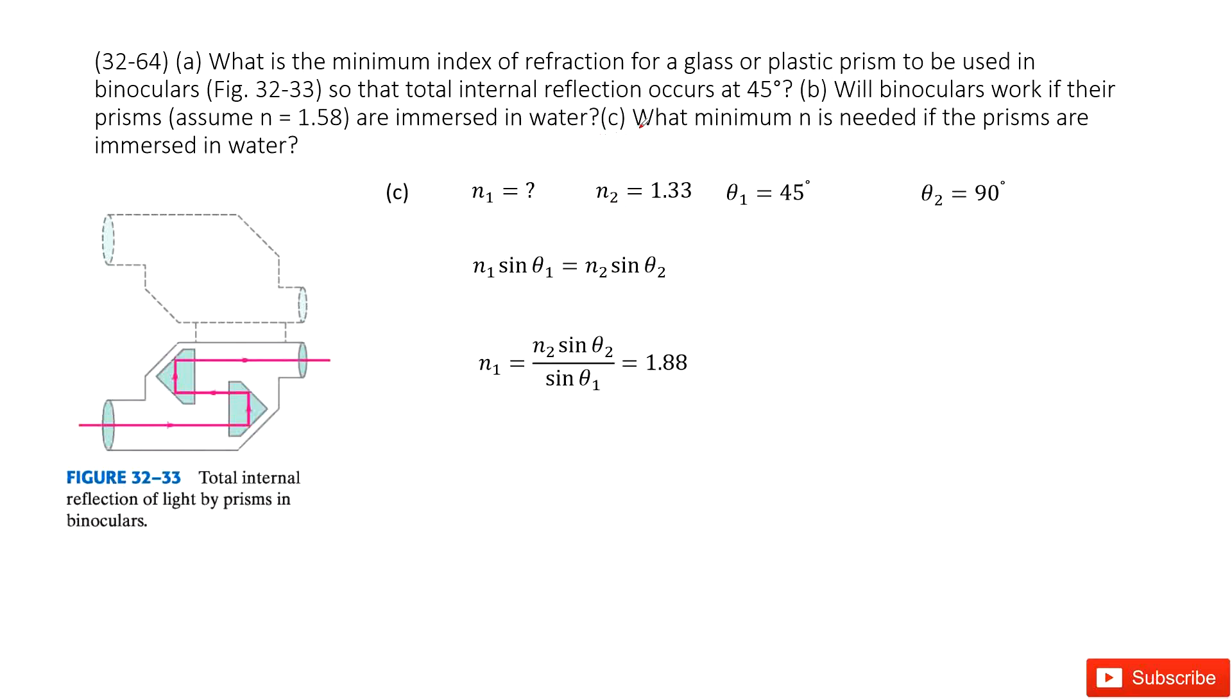The third one asks: what is the minimum n needed for this object in water? In this case, we don't know n1, we need to find it. n2 is 1.33 because it's in water, and theta 1 and theta 2 are given. We write down Snell's equation, convert it to get a function for n1, input all the given quantities, and we get the answer. Thank you.